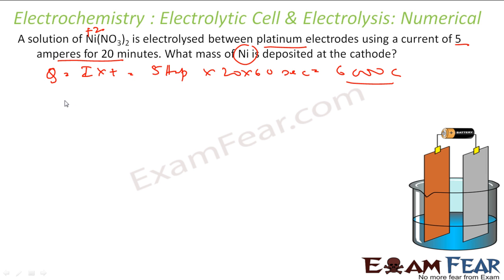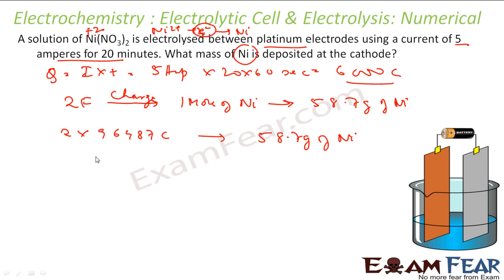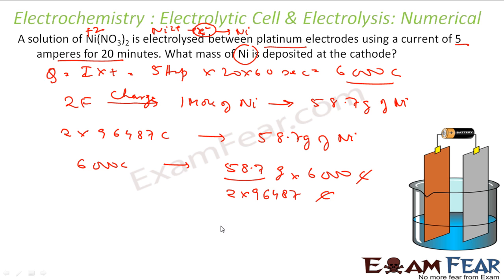Since Ni²⁺ becomes Ni by taking 2 electrons, 2 Faraday charge is required for 1 mol of nickel, which is 58.7 g. So 2 × 96,487 coulombs gives 58.7 g of nickel. With 6000 coulombs: mass = (58.7 ÷ (2 × 96,487)) × 6000 = 1.825 g. So 1.825 g of nickel is deposited when the circuit runs for 20 minutes at 5 ampere.